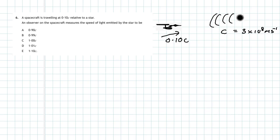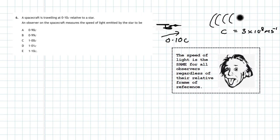This comes down to Albert Einstein, who stated that the speed of light is the same for all observers regardless of their relative frame of reference. This means that someone on that spaceship will measure the light coming from the star to be C — 3 times 10 to the power 8 metres per second — even if the spacecraft is moving toward or away from the star at 0.10C. No matter where you are in the universe, the speed of light is a fundamental constant. The answer is C.